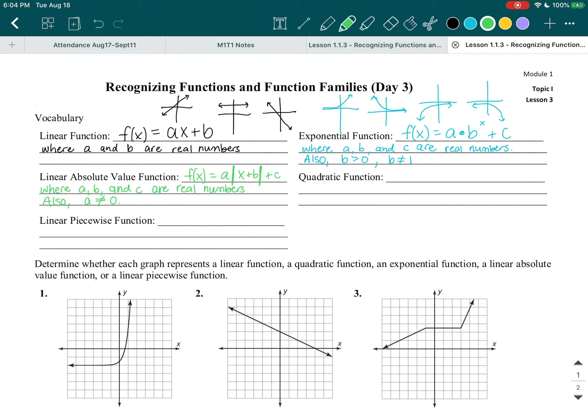And so these graphs, they end up looking like, let me draw it over here. Here's your x and y axis. They either look like a v, or an upside down v. Let me draw the arrows on the end. So these are linear absolute value functions.